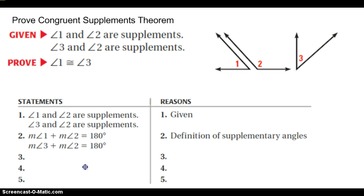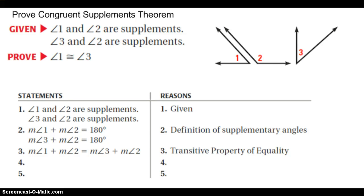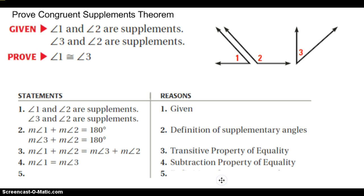Now look what happens in step 3. If 1 and 2 is 180, and 180 equals 2 plus 3, I cut out the middleman — 180 — and say this equals this. Hopefully, cutting out the middleman, you realize that's transitive or substitution — I would take either. I have an equation and I know I'm trying to get down to angles 1 and 3. Since they both have 2 in them, I subtract, and I now get angle 1 equals angle 3. So that's simply subtraction.